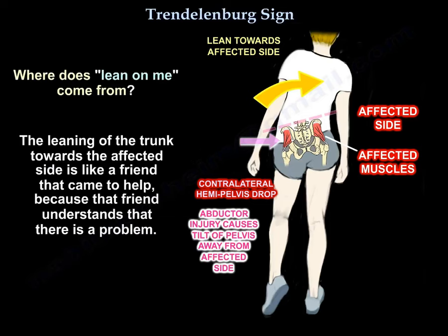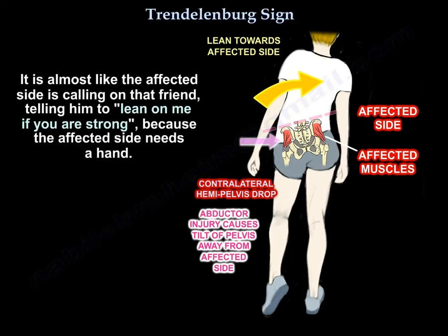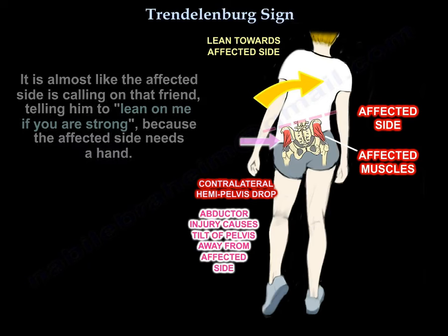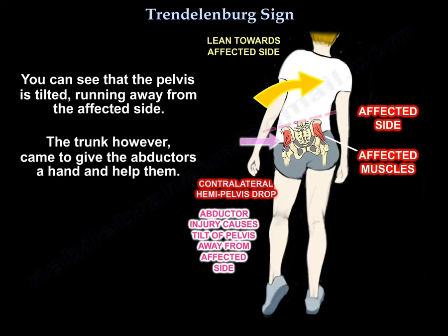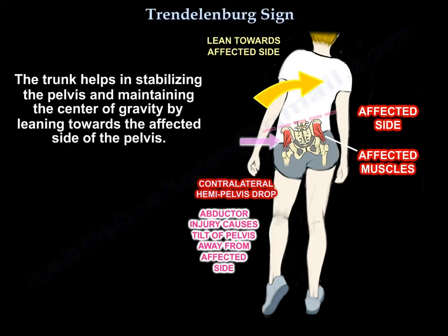So where does the phrase 'lean on me' come from? The leaning of the trunk towards the affected side is like a friend that came to help, because that friend understands there is a problem. It's almost like the affected side is calling on that friend saying 'lean on me if you are strong,' because the affected side needs a hand. The pelvis is tilting away from the affected side, and the trunk comes to give the abductors a hand by leaning towards them, helping to stabilize the pelvis and maintain the center of gravity.